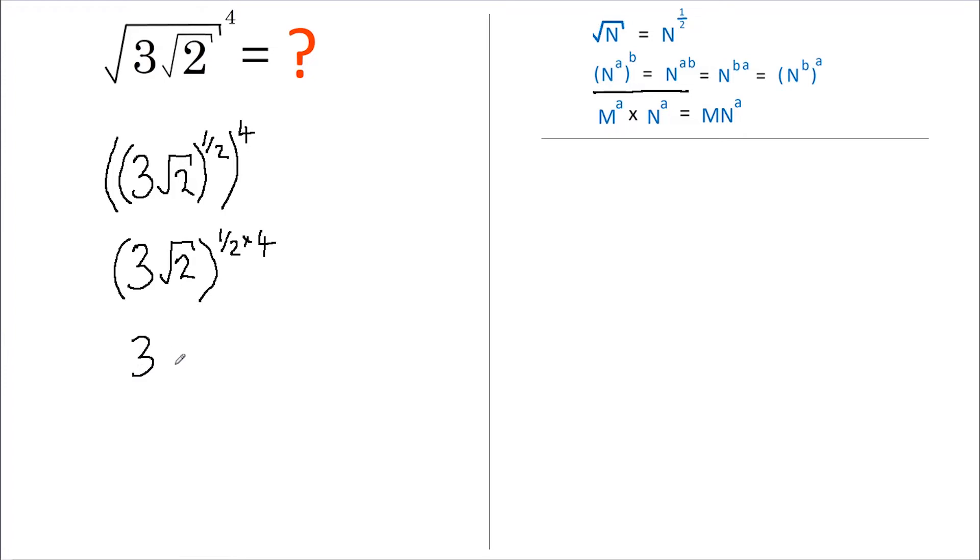In other words, we have 3 root 2 all raised to the power of 2. This can then be rewritten as 3 to the power of 2 multiplied by root 2 to the power of 2.